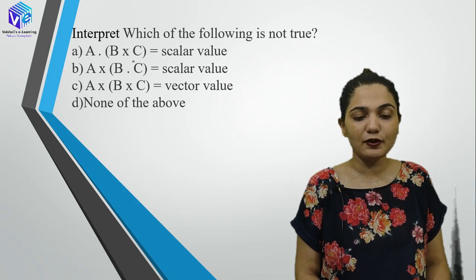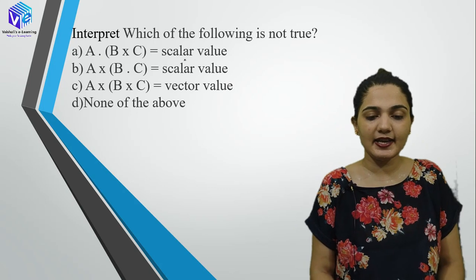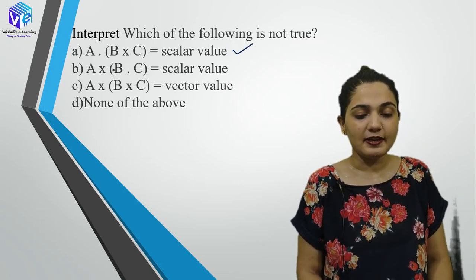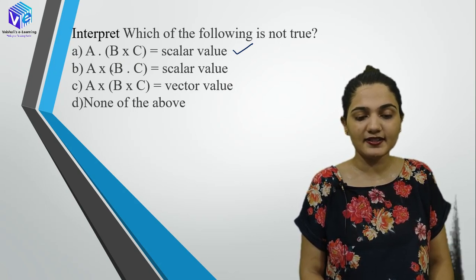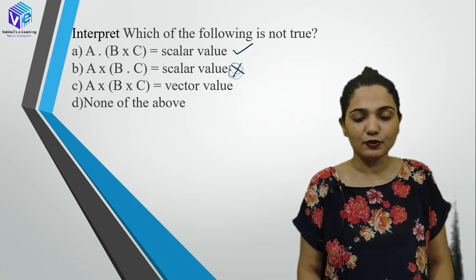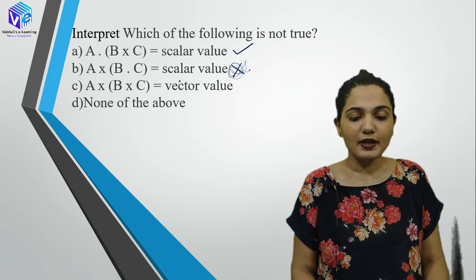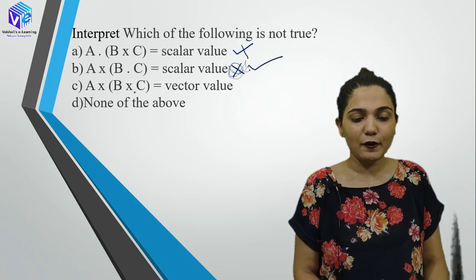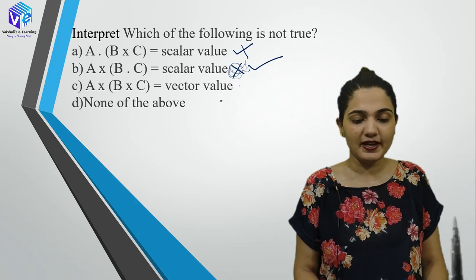Interpret which is not true: A·(B×C) — B×C gives a vector, dot product with A gives scalar — this is true. A×(B·C) — B·C is scalar, and you cannot take cross product of a vector with a scalar — so this is not true. A×(B×C) gives a vector — true. We had to find the 'not true' option.